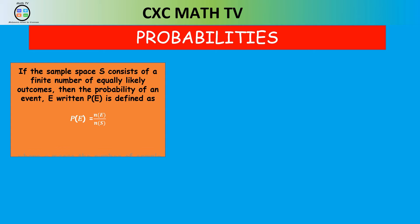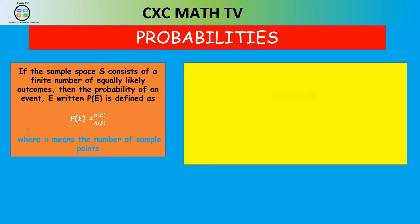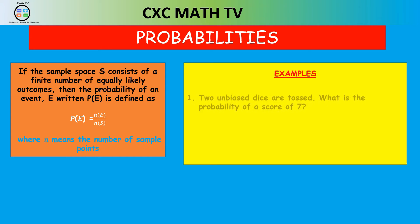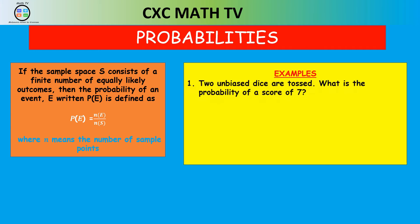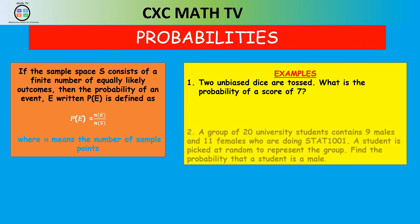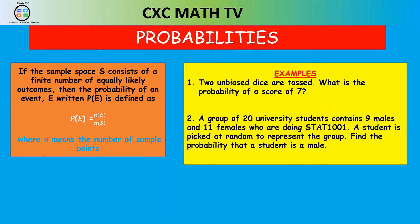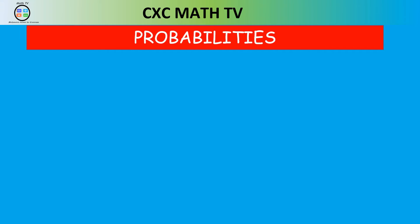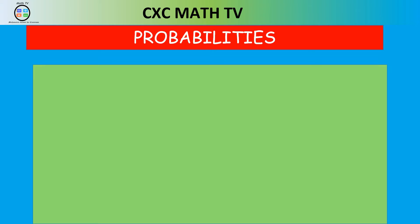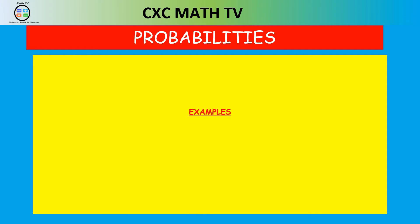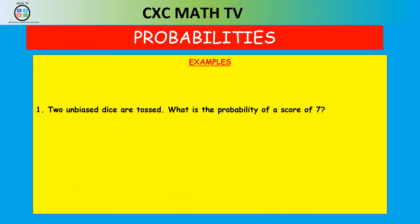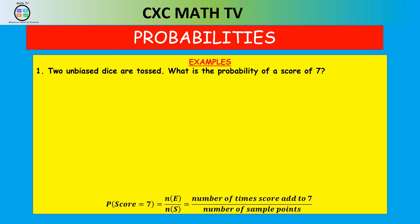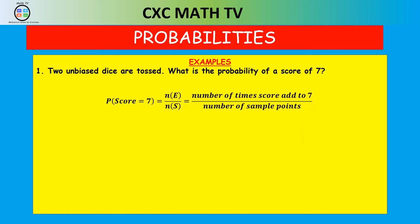Let's look at two examples. First: two unbiased dice are tossed — what is the probability of a score of seven? The probability of getting a score of seven is the number of times the two dice add up to seven divided by the number of sample points. The number of sample points is 6 × 6 = 36.